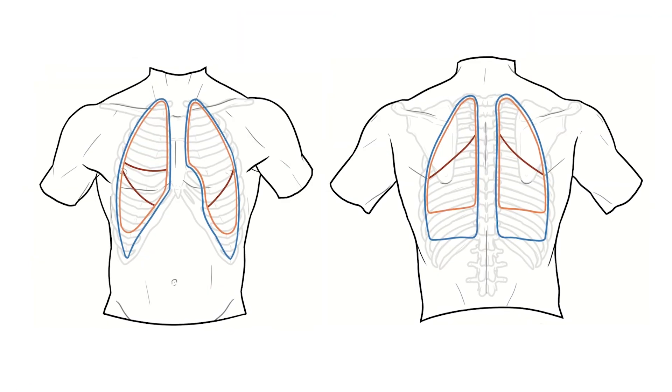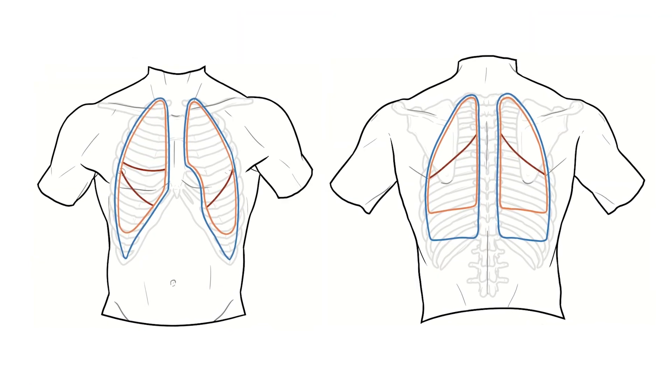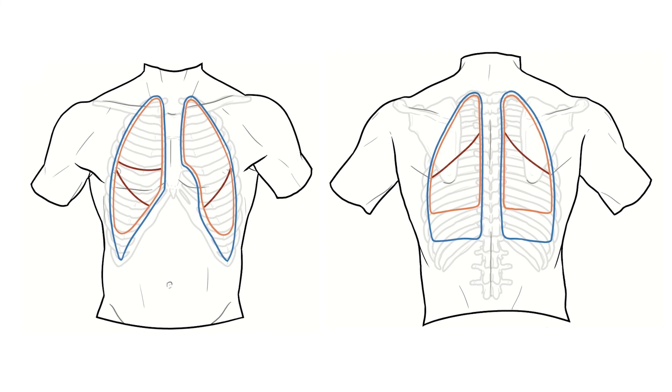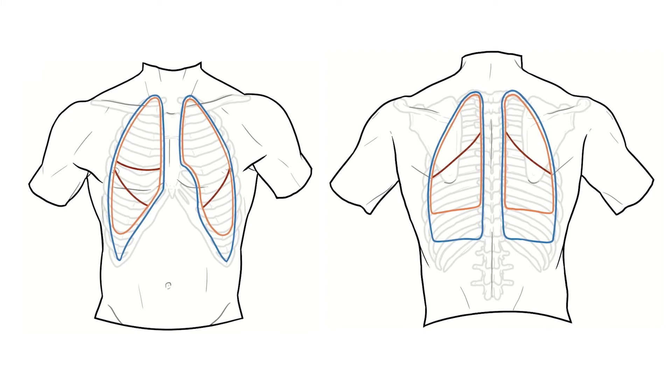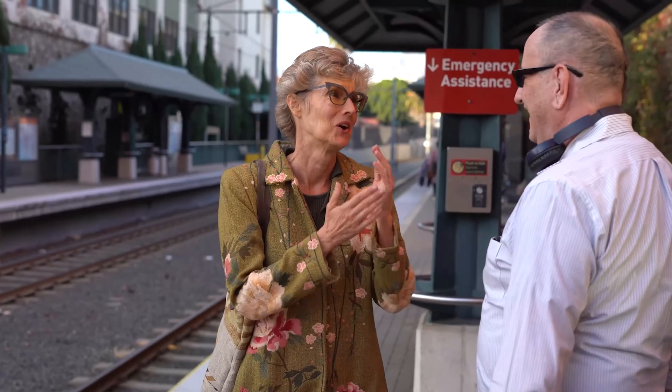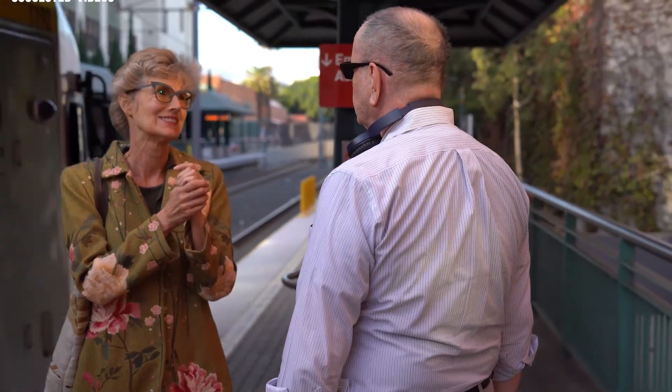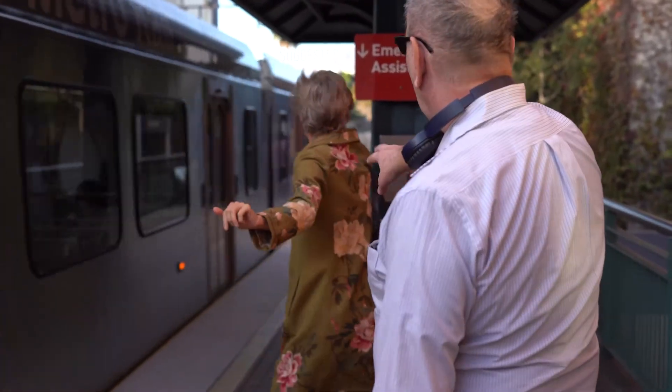And with that we've drawn the surface anatomy of the lungs, their individual lobes, and the pleural cavities that house them. Hopefully you can now place the lungs more accurately within the chest, but if you have any questions or problems please just get in touch. Thank you for watching, take care, and I'll hopefully see you soon.